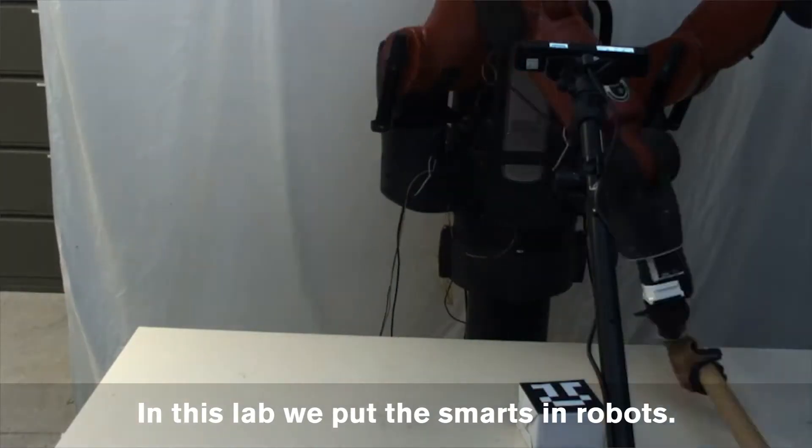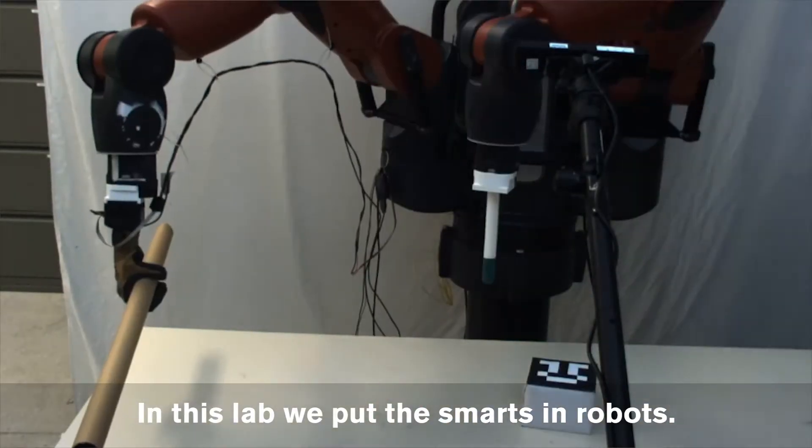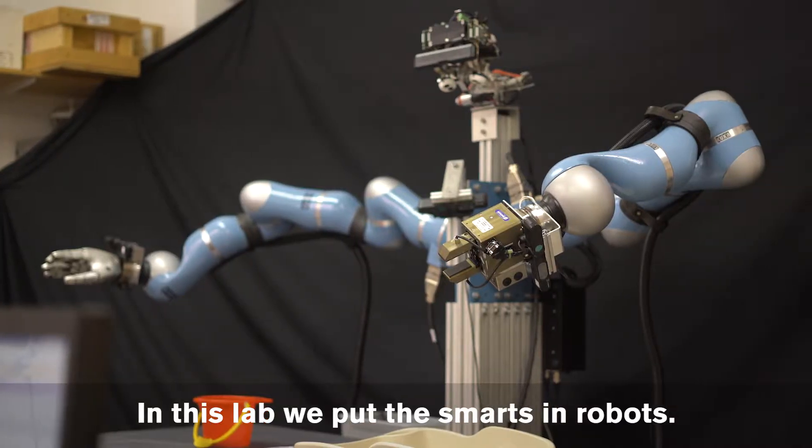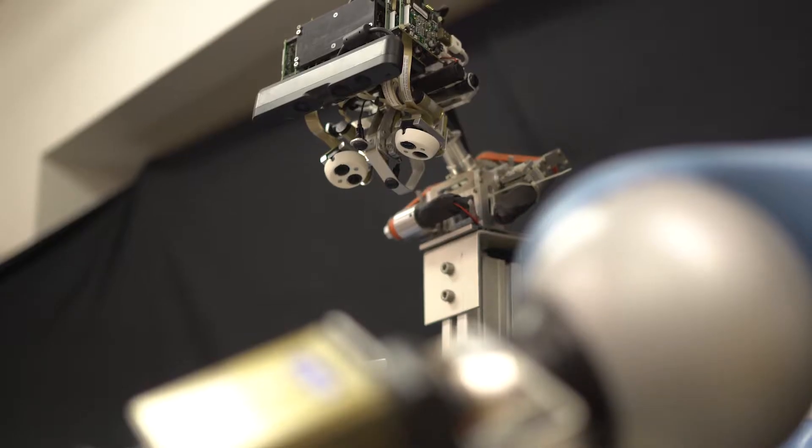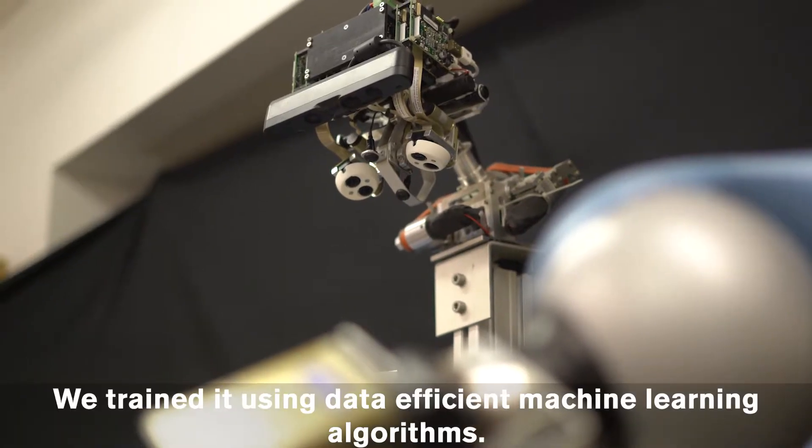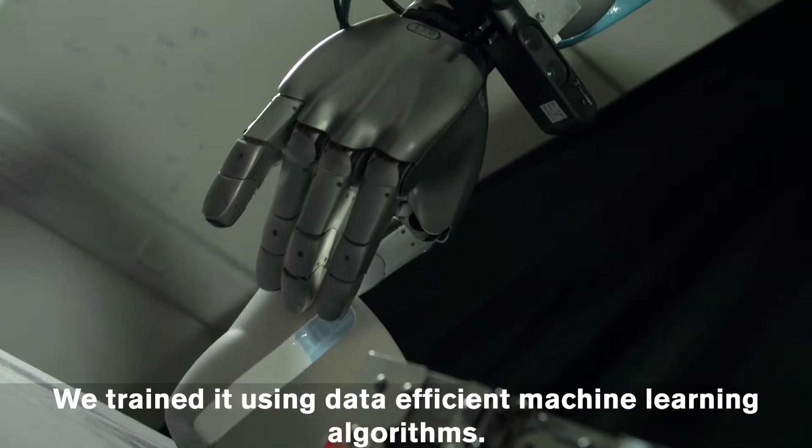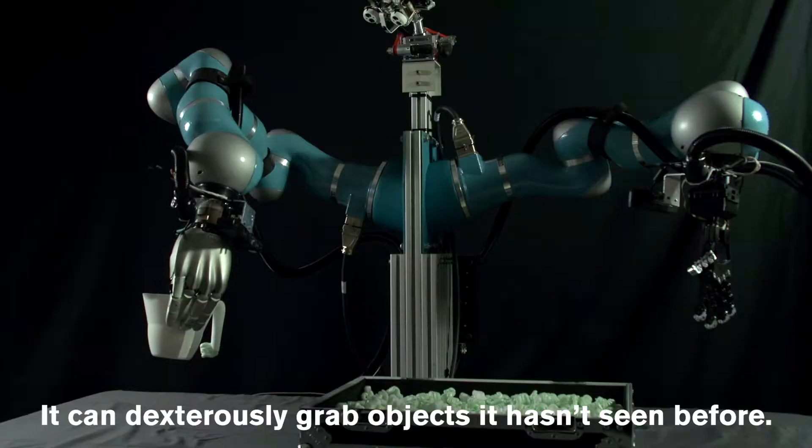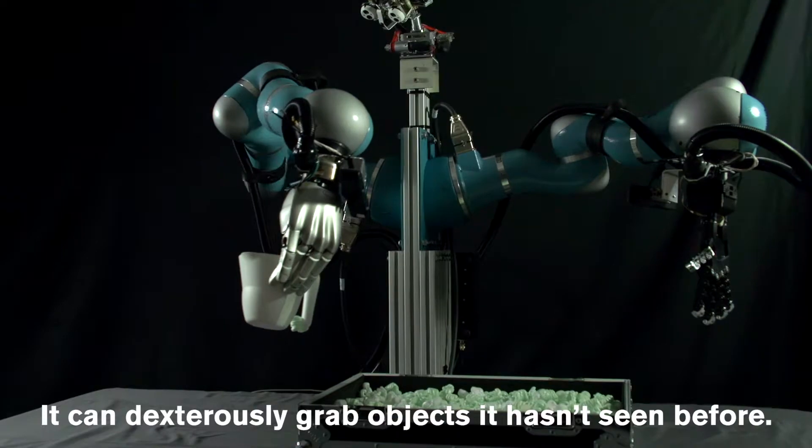And in a nutshell what we do in this lab is we put the two together. So we put the smarts in robots. We trained it using what we call data efficient machine learning algorithms to grasp objects that it has never seen before and to do it dexterously.